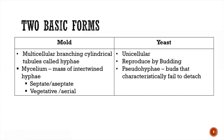There are two basic growth forms of fungi: molds and yeasts. Molds are found as multicellular branching cylindrical tubules called hyphae, and a mass of intertwined hyphae is called mycelium — plural mycelia.